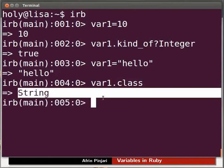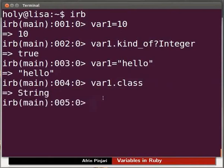Ruby has automatically changed the variable type from integer to string. We will now learn how to convert a variable value to different type. Let's switch back to our slide.